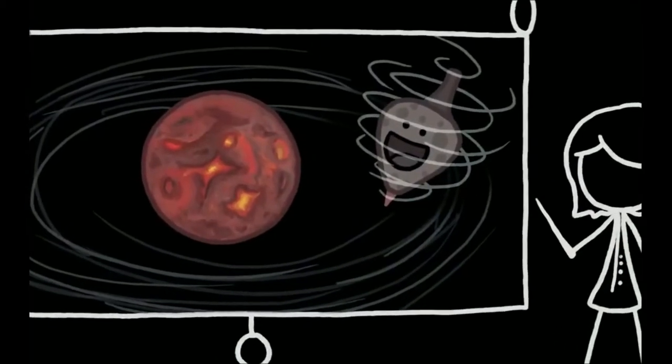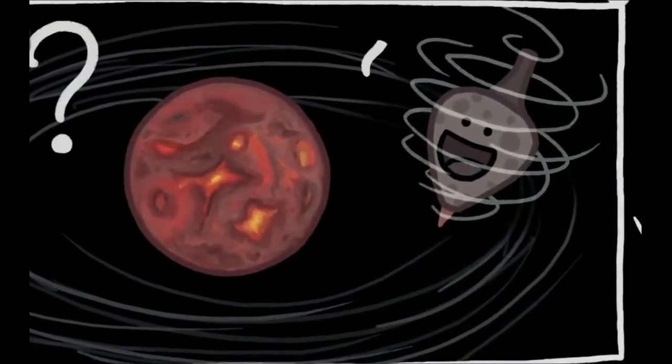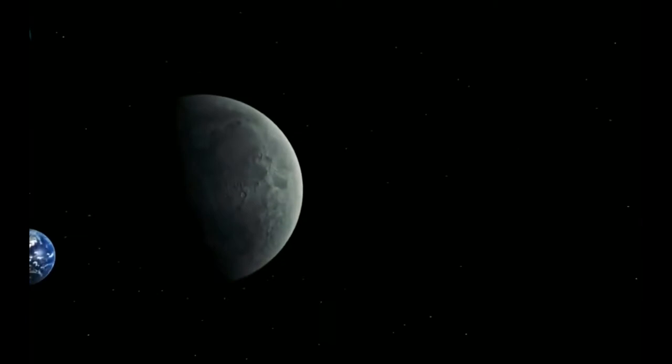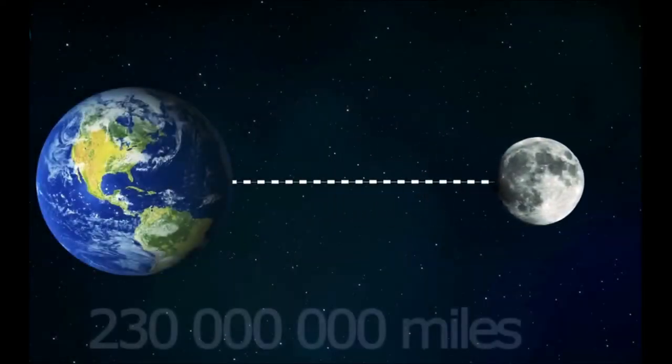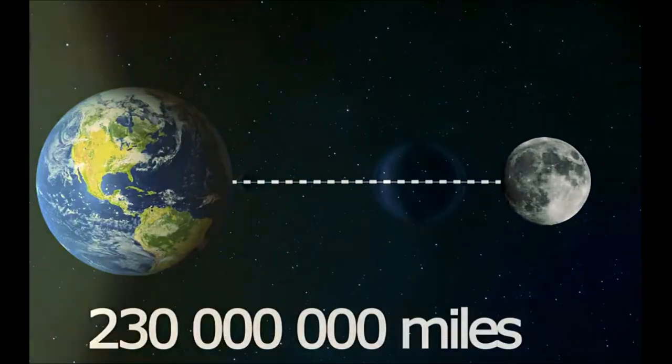In our early solar system, both the Earth and the Moon rotated independently of each other, but the Earth's gravity grabbed onto the tidal bulges and slowed down the rotation of the Moon. To compensate for the loss of momentum in the system, the Moon drifted away from the Earth to its current position about 230,000 miles away.